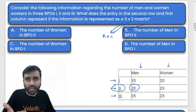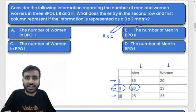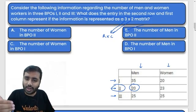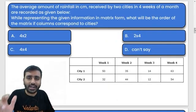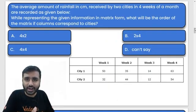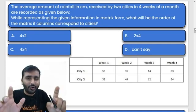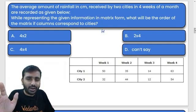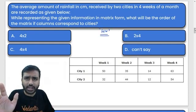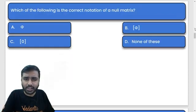Let's double-check — the second row and the first column is correct, no issues. The next question is your homework — it's very simple, anybody can answer it. Tell me in the comment box. Let's go directly to the next question.